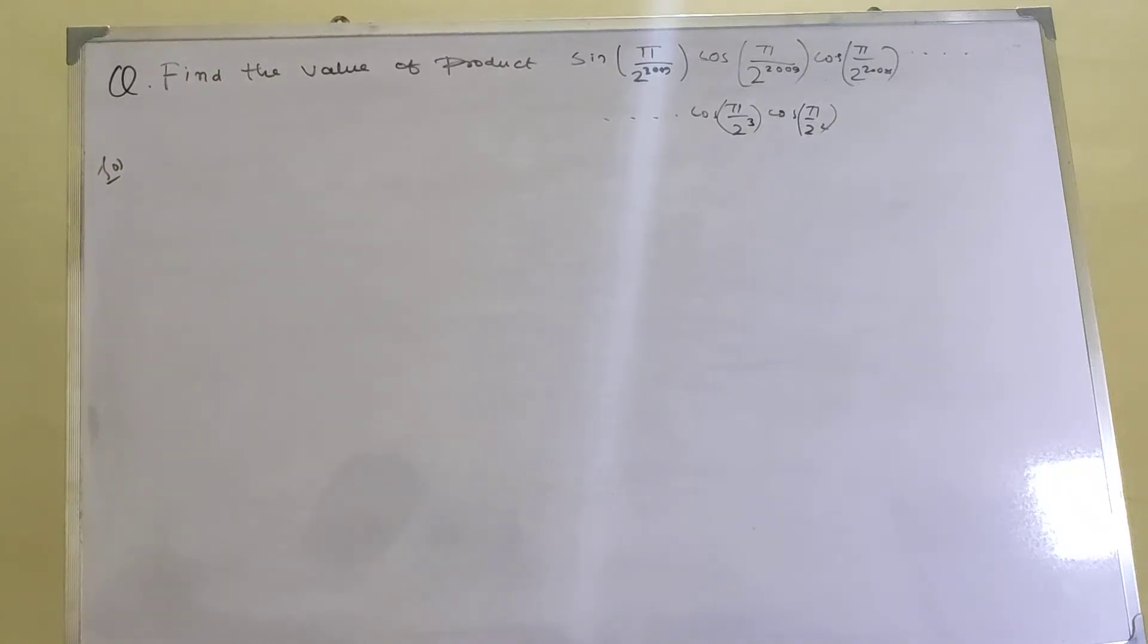Hello guys, welcome to Math Tube. This question is: find the value of product sin(π/2)^2009 cos(π/2)^2009 cos(π/2)^2008 going through cos(π/2)³ cos(π/2)². Please give a try to this question.